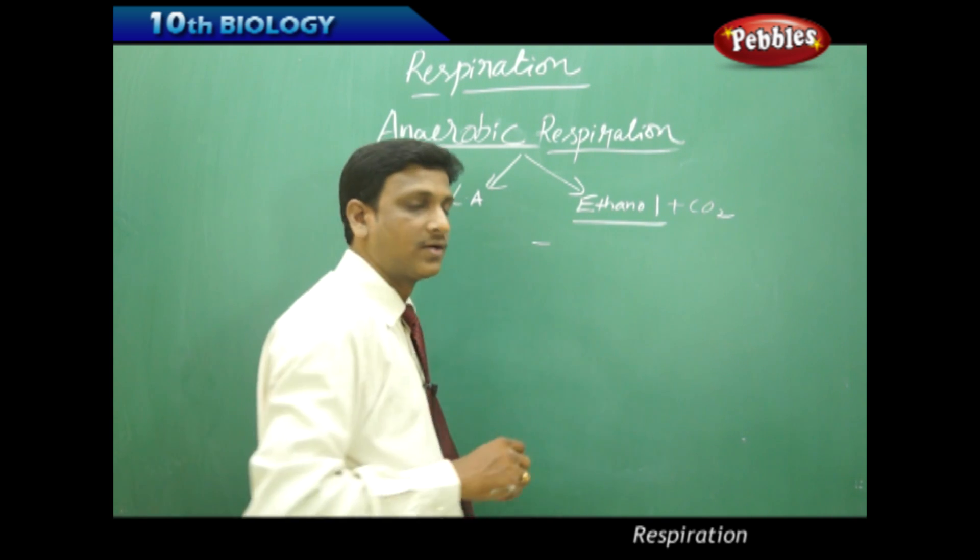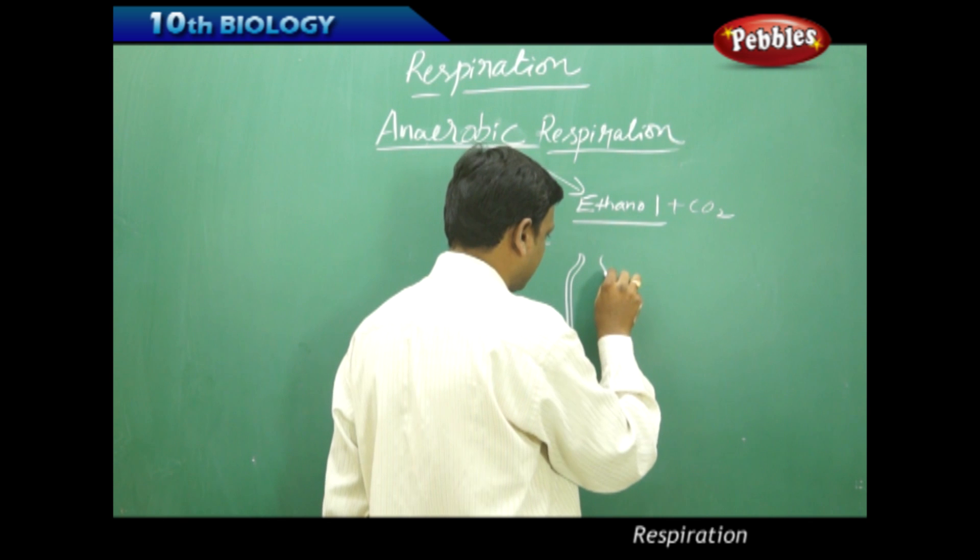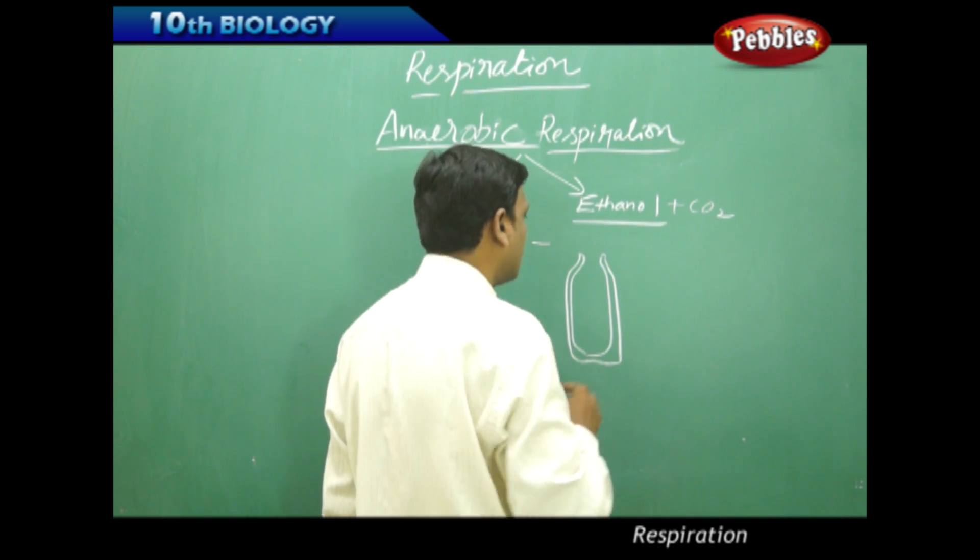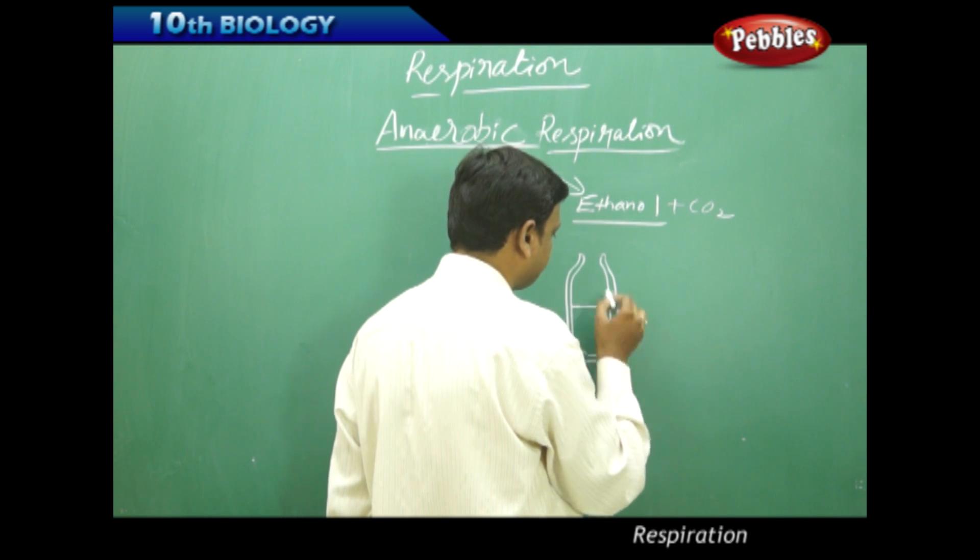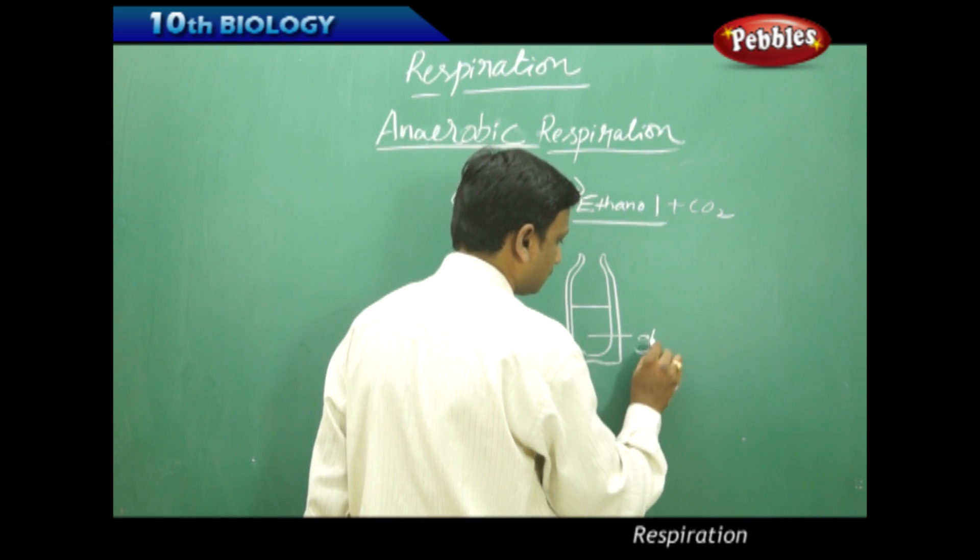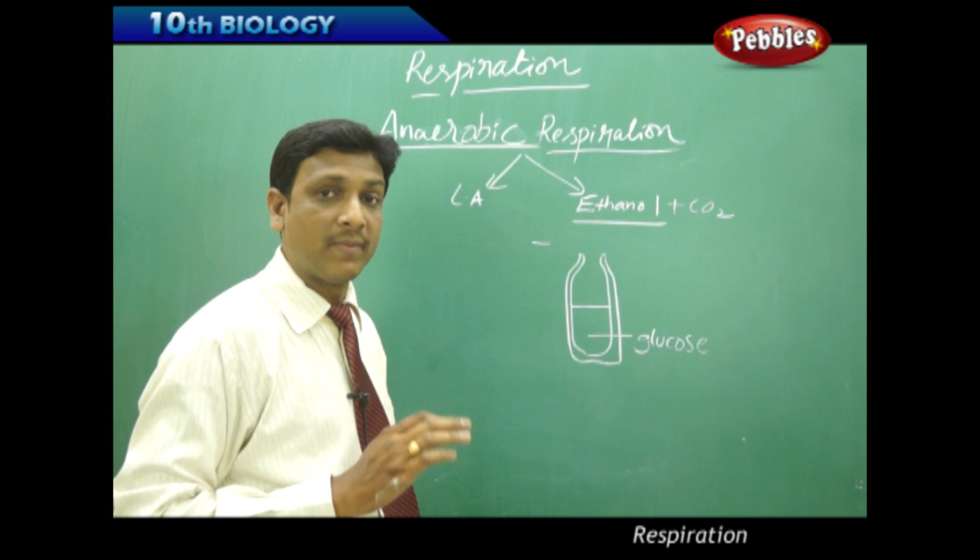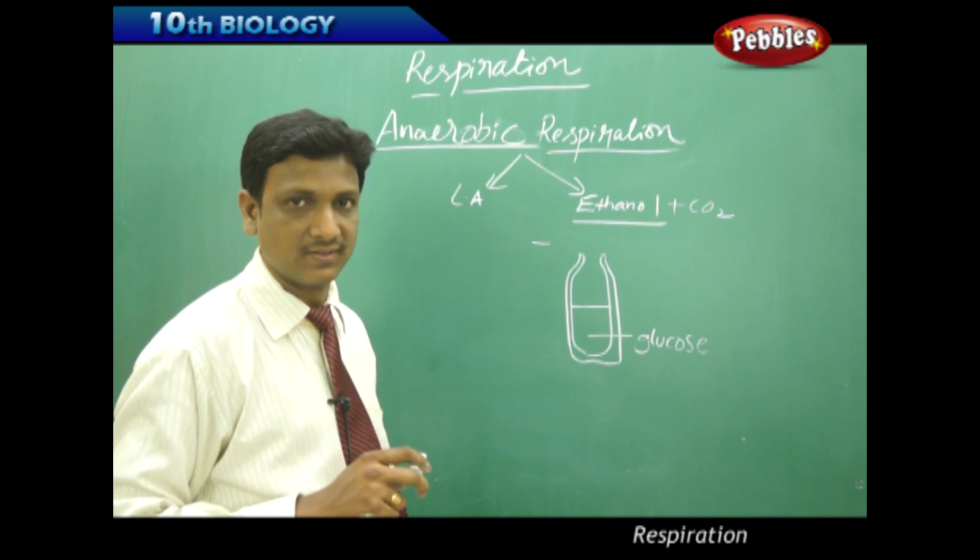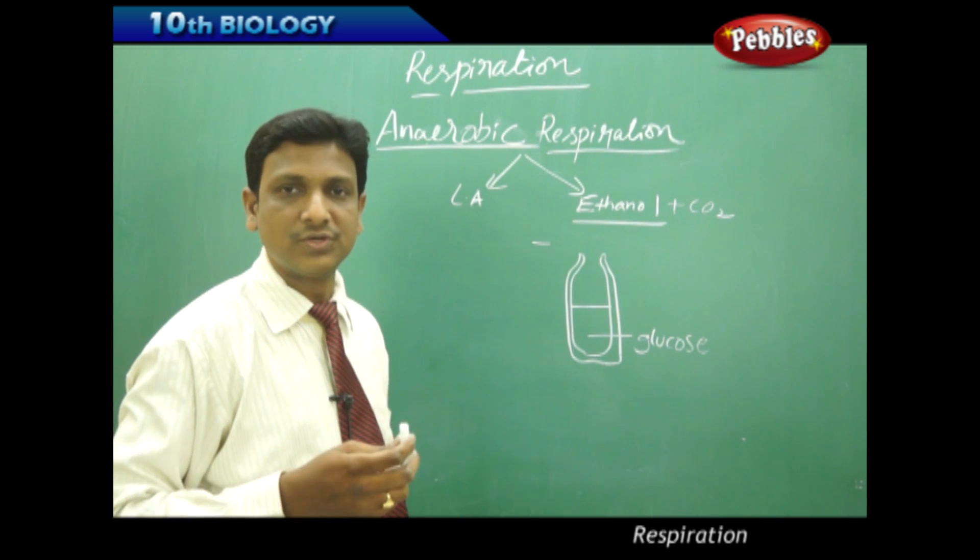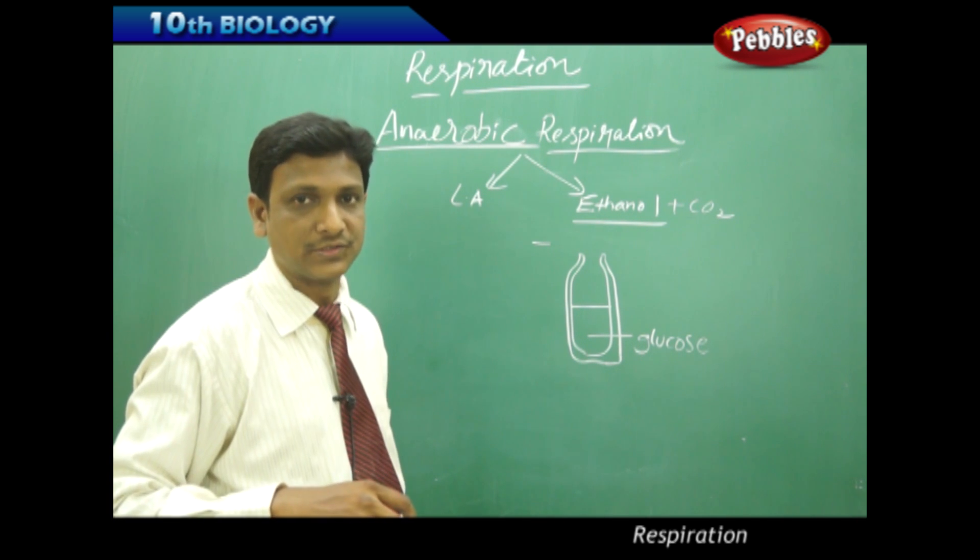Let us see what activity is required. We need a flask like this. In the flask we need to take glucose solution. We are going to perform anaerobic respiration, that means absence of oxygen, so there should not be any oxygen in the raw material we are taking. We prepare the glucose solution—will it contain oxygen? Of course it may contain some dissolved oxygen. We want to remove the dissolved oxygen also.